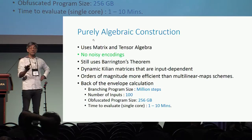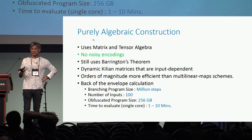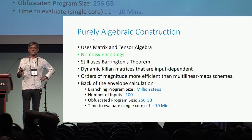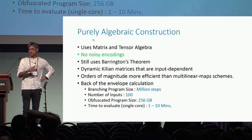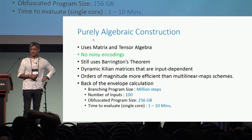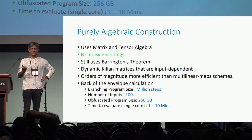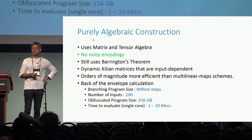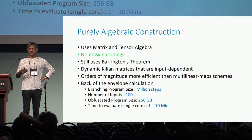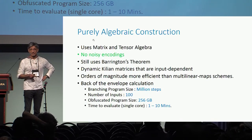It still uses Barrington's theorem, which is what the multilinear map-based schemes were using. So far it works for branching programs, and so also for NC1 circuits.